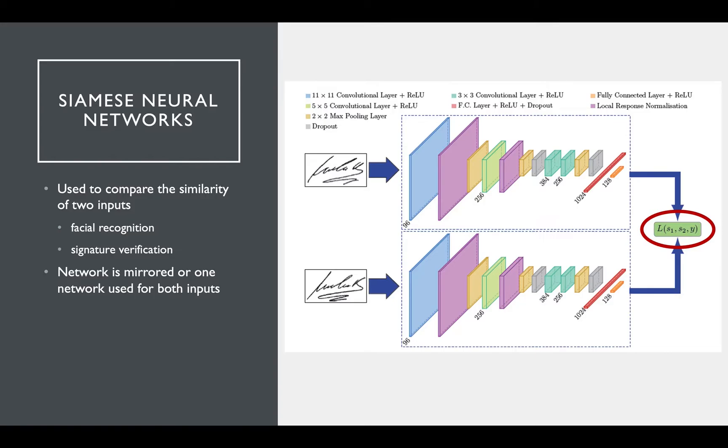So that at a high level is the setup of a Siamese neural network. Two inputs are passed in, a distance is computed to compare if they can be classified as similar. In this case, similar means from the same person.